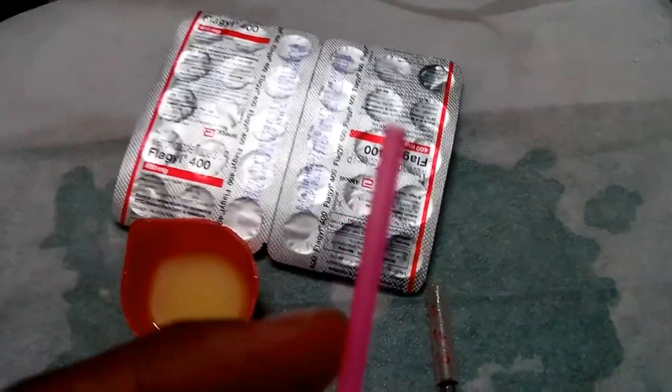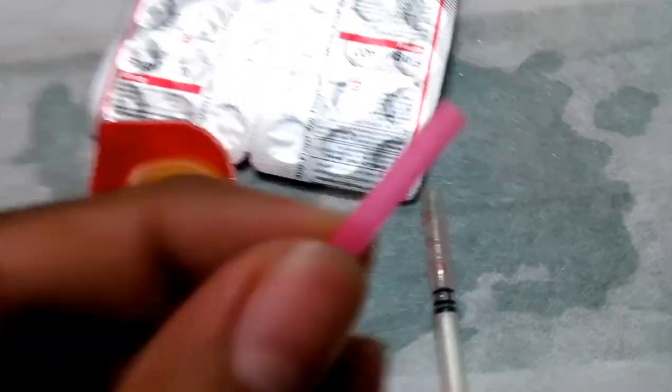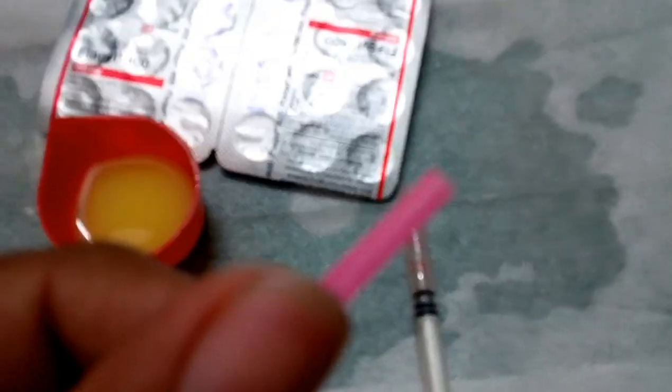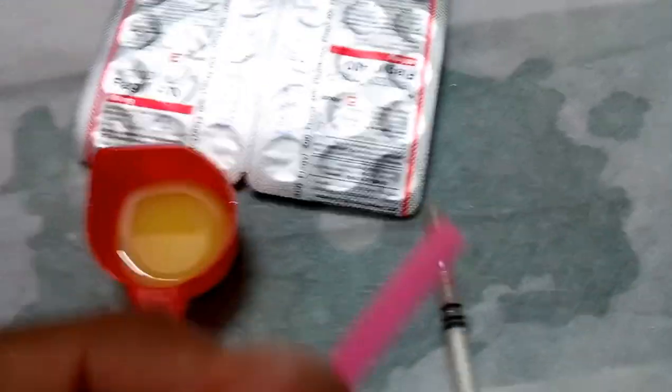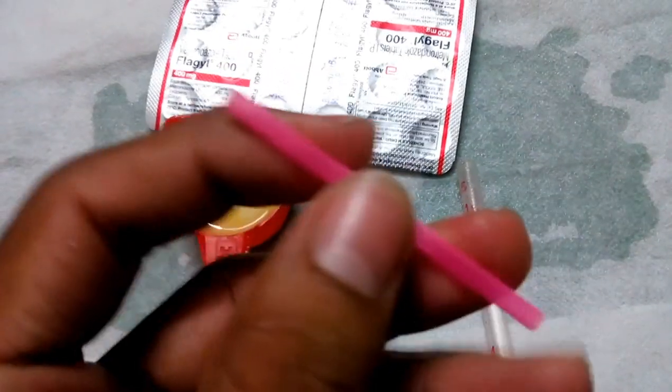Then the main thing to deworm this parrot fish is this secret equipment, also commonly available as a straw. This I have got from a drink, a soft drink in India called lychee juice. My fellow Indians can get this easily, but people abroad watching, you can get something similar to this.